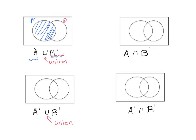Everything outside B — so it ends up that only one small portion is not shaded: the B-only section. That is A union B complement. Remember, you're shading everything in A as well as everything in B complement.